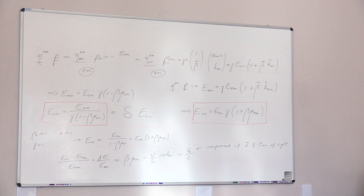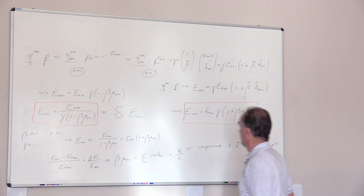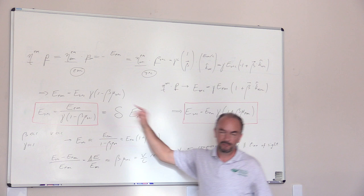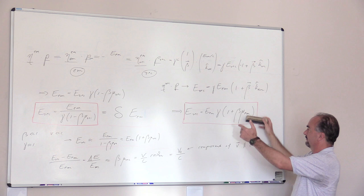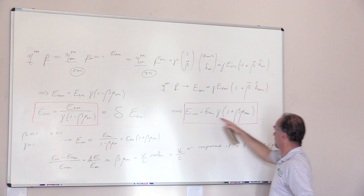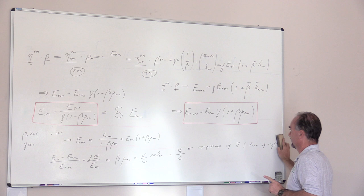What does that tell us? That's the last thing we will derive today. If this is the same as 1 over γ times 1 minus βμ, then we have the angle with respect to the x-axis in the receiver's frame. For these two to be the same, these angles cannot be the same. And that is what gives us relativistic aberration.